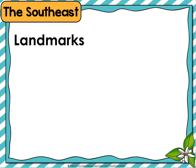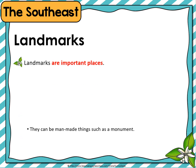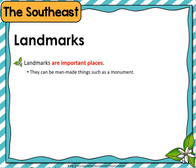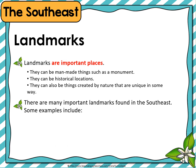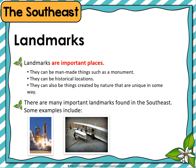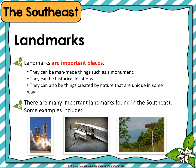And finally, the southeast landmarks. Landmarks are important places. They can also be things created by nature that are unique in some way. There are many important landmarks found in the southeast. Some examples include NASA Cape Canaveral, Kitty Hawk in the Carolinas where the first flight took place, and the Appalachian Mountains. This is the southeast region of the United States.